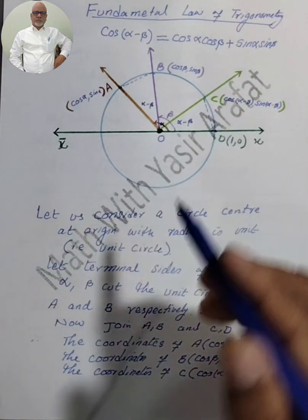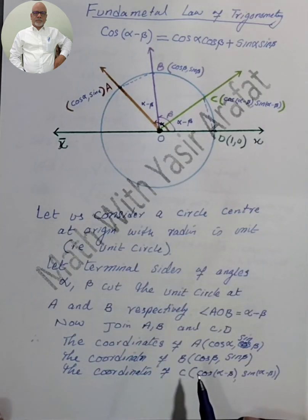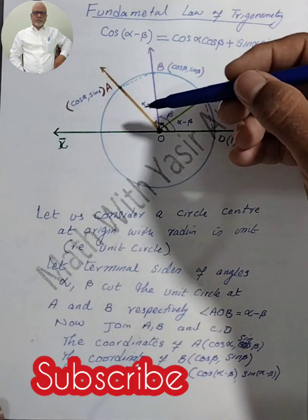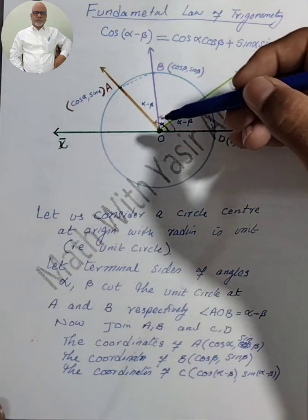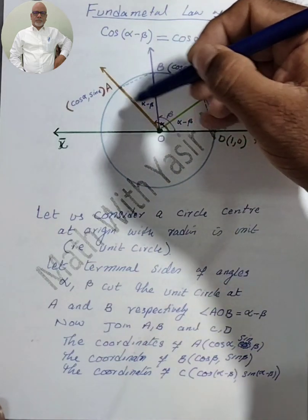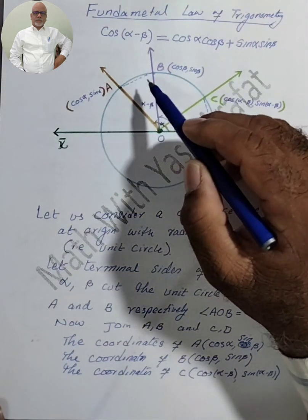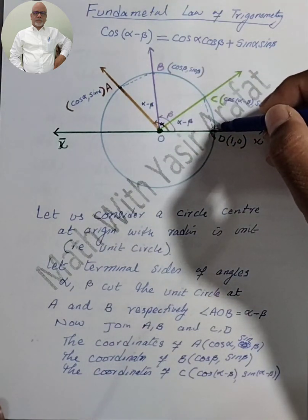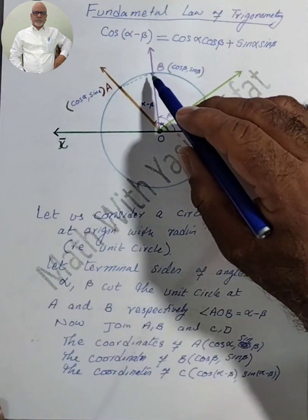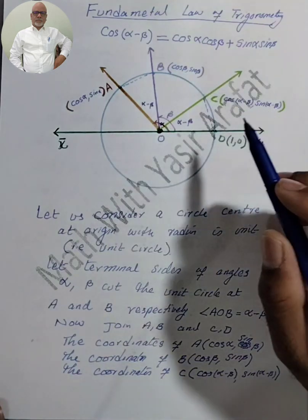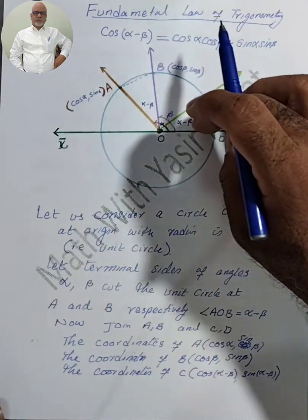As I told you, we have to consider a unit circle centered at the origin. We have considered the angles α and β with terminal arms A and B respectively, and the angle AOB is α minus β. Now we have to join AB and CD, so this gives us two triangles: triangle AOB and triangle COD.